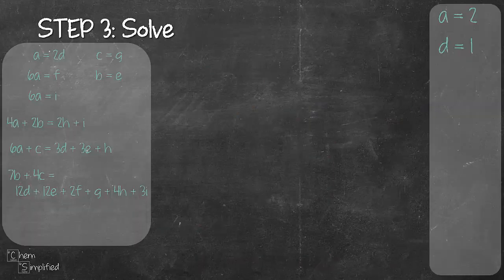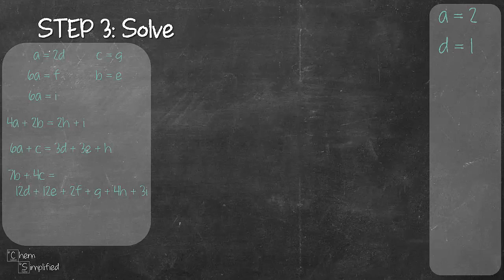Let's move on to the third step. So I've rearranged a little bit the equations that we formed earlier on the left hand side of the screen and we're gonna start by setting the value for one of the coefficients. I'm gonna set a equals 2. That way we can find the value for d, f and i easily.